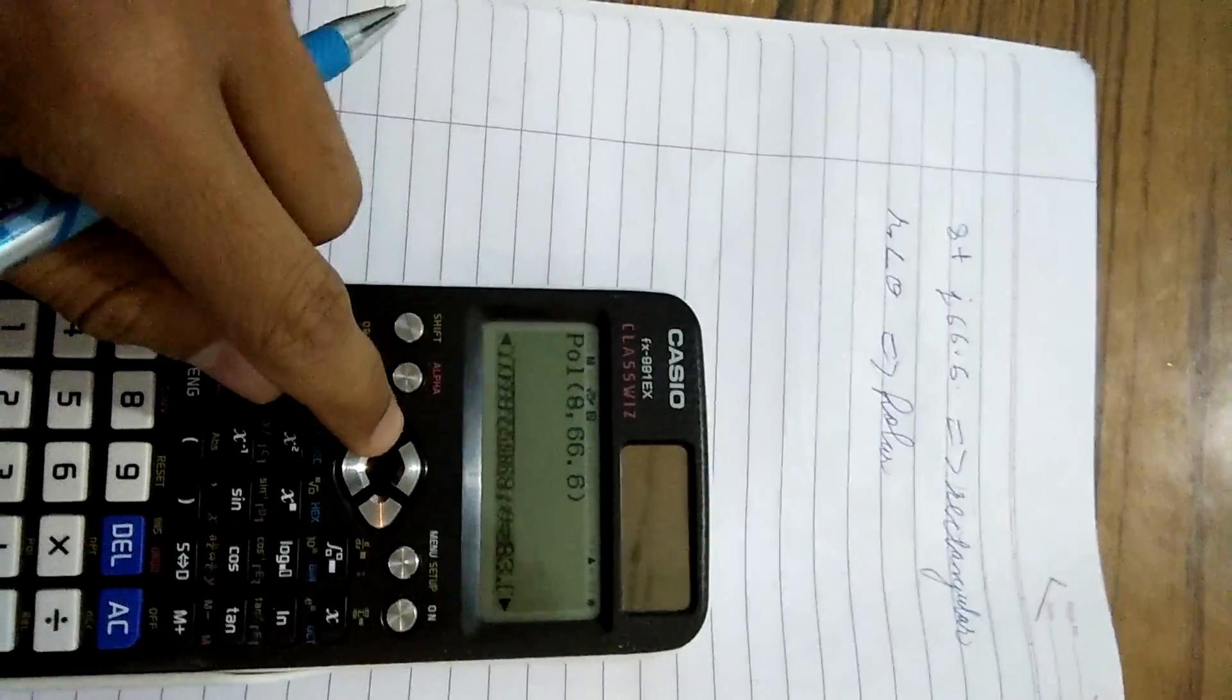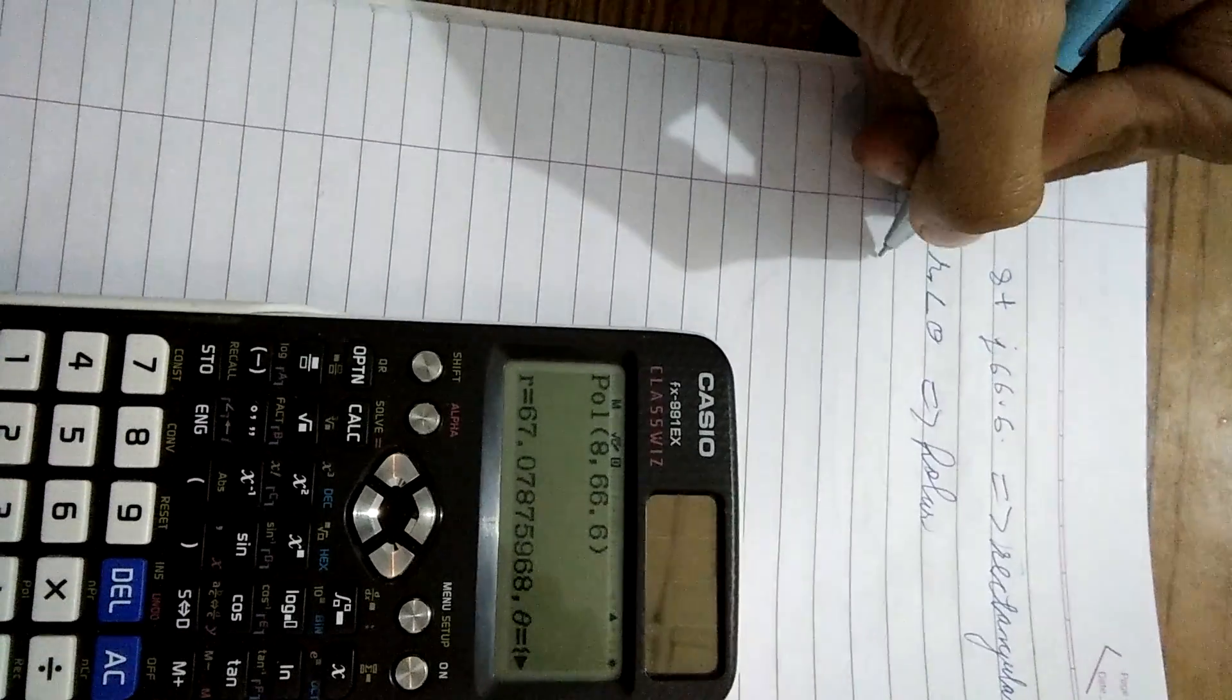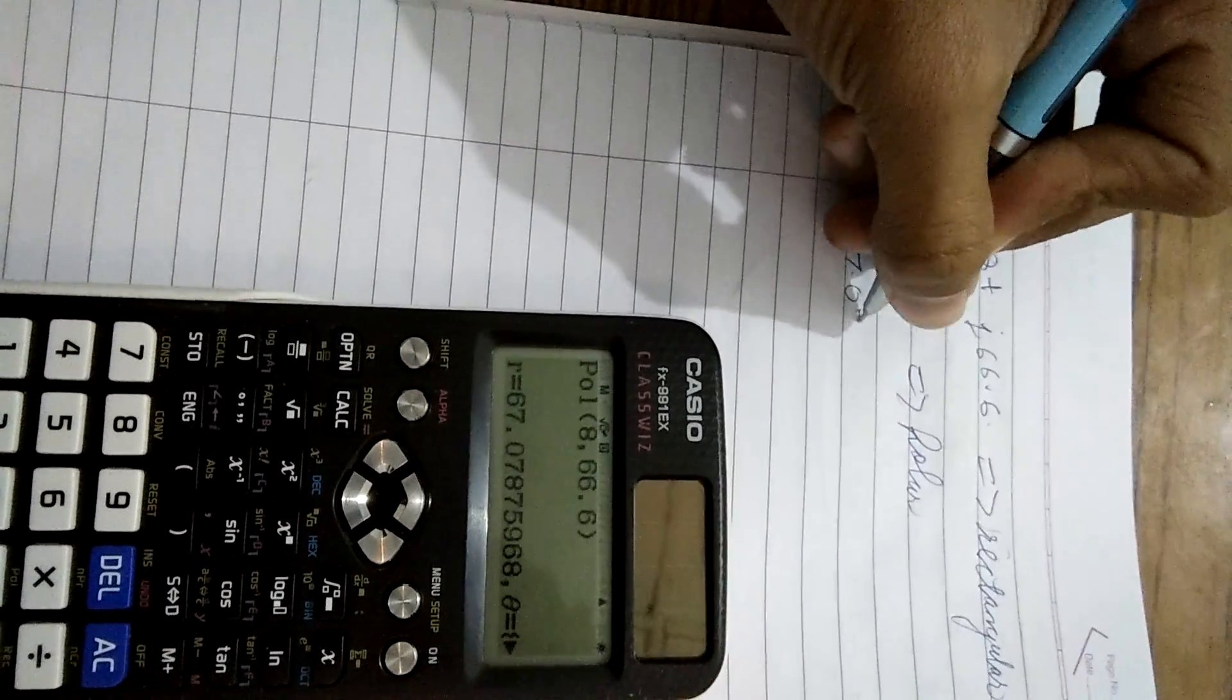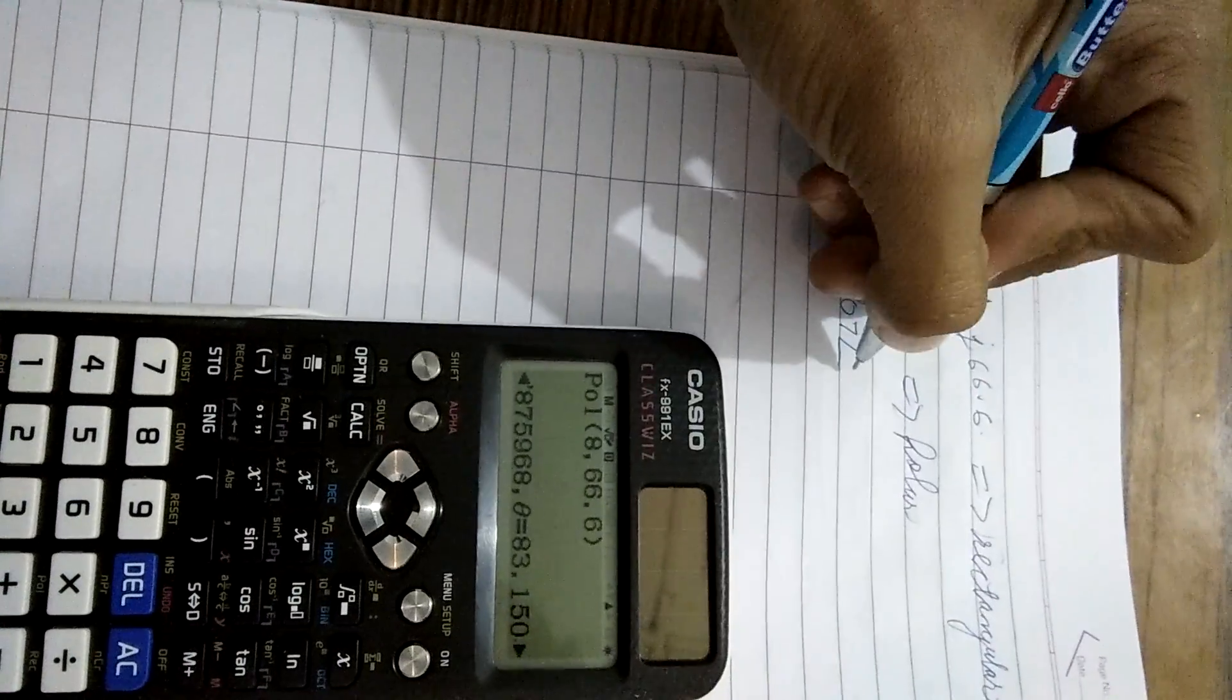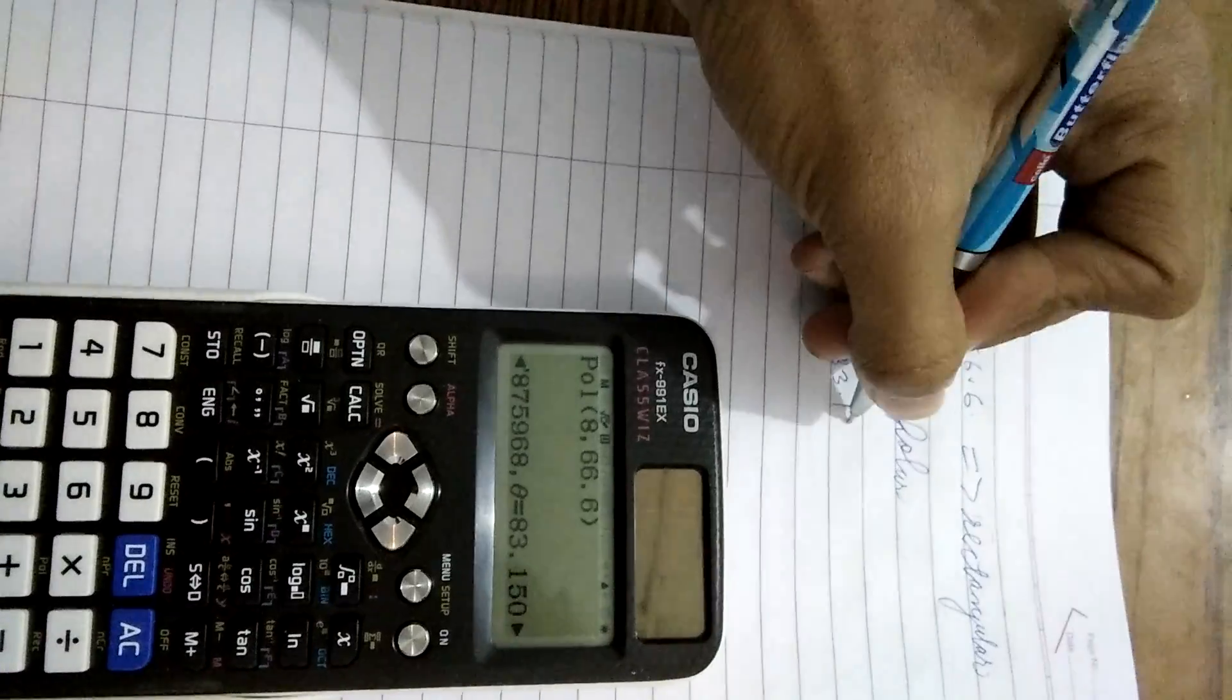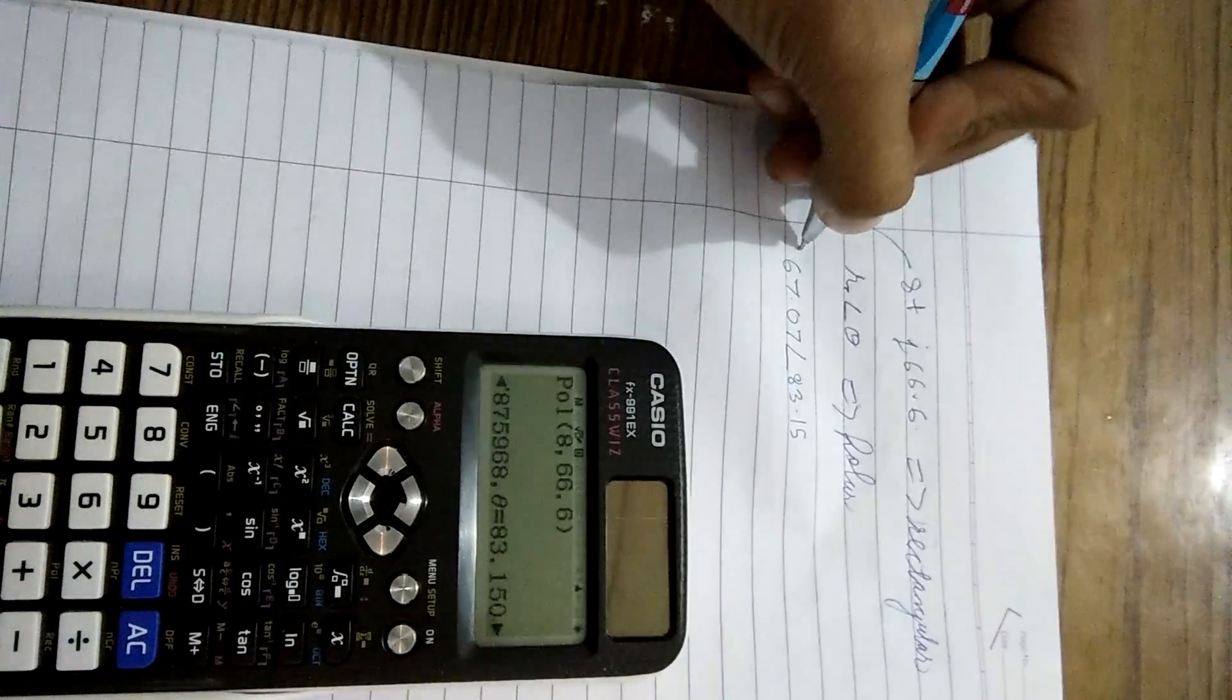What we have got in our answer is R equals 67.07, therefore we will write 67.07 angle, and theta equals 83.15, so we write 83.15. Simply this gets converted into this.